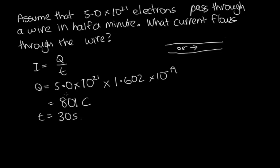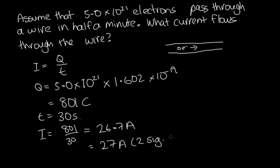So now we can just substitute these into our equation for current. So current is given by I equals 801 over 30. And solving that on the calculator, we get 26.7 amps. And then because this is given to two significant figures, we've got 5 and a 0, so that's two numbers. We should give this to two significant figures. So it's equal to 27 amps, and that's to two significant figures. So that's how we would solve a question like that.